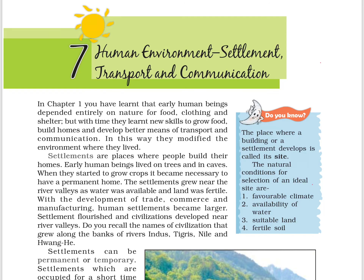Hello friends, welcome to the NCRT sessions. In this video I am going to explain Chapter 7 of Class 7 NCRT Geography. Here we have the definition of a site: a site is a place where a building or a settlement develops. Generally the natural conditions for the selection of a site are favorable climate, availability of water, suitable land, and fertile soil.